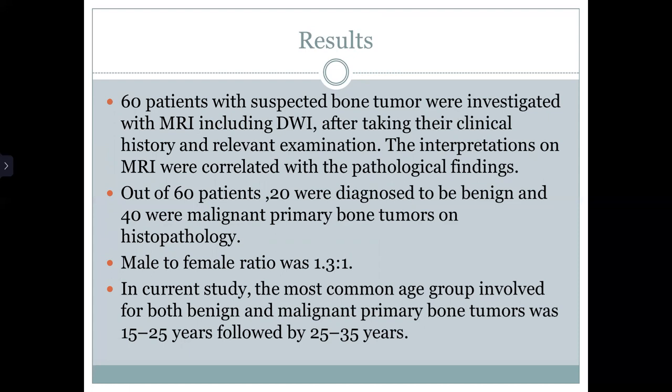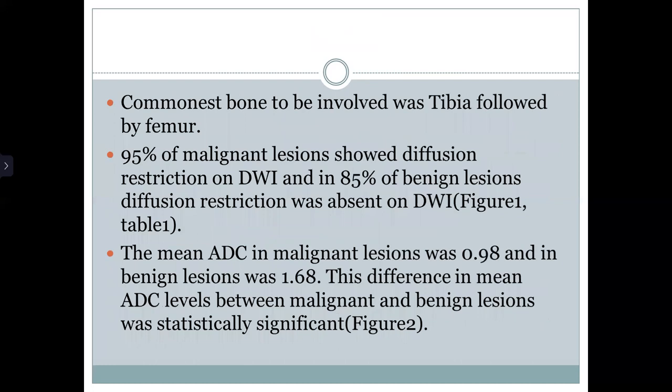On histopathology, the male to female ratio was confirmed to be 1.3 to 1. In the current study, the most common age group involved for both benign and malignant primary bone tumor was 15 to 25 years, followed by 25 to 35 years. The commonest bone involved was the tibia.